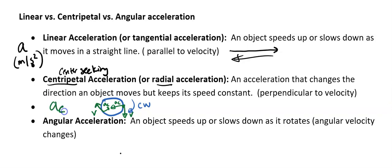So centripetal acceleration, that symbol is AC, and that just makes something change directions. Units we use for that are going to be meters per second squared.